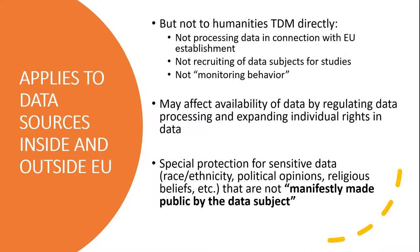The GDPR obviously applies to controllers and processors in the EU. But unlike most laws, it is also extraterritorial — that is, it applies to organizations and individuals outside of the EU as well under certain conditions. Specifically, Article 3 of the GDPR says that organizations and individuals located outside of the EU, including in the U.S., can be controllers or processors subject to the GDPR if they direct or conduct the processing of personal data of EU residents who are actually in the EU, and one of three following conditions applies: they do it in connection with activities of an establishment they have in the EU, for example an office in an EU member country.